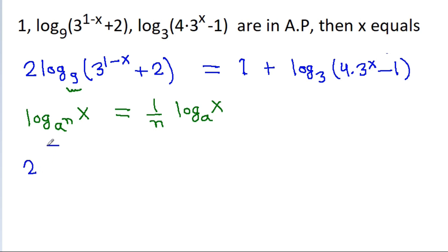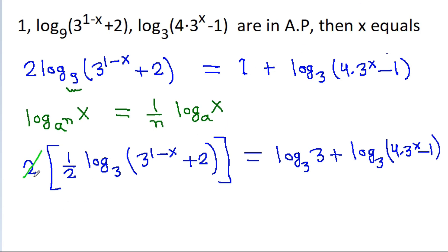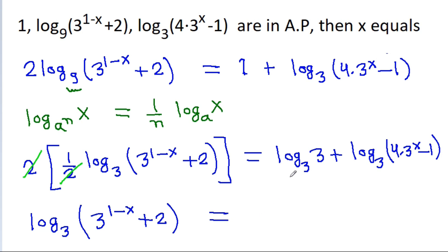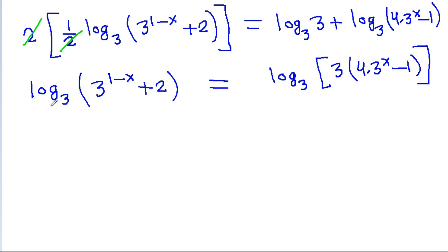So it will be: two times log base 9 becomes (1/2) times log base 3 of 3 power (1 minus x) plus 2, which equals log base 3 of 3 plus log base 3 of 4 into 3 power x minus 1. The 2 and 1/2 cancel, giving log base 3 of 3 power 4 into 3 power (1 minus x) plus 2 equals log base 3 of 3 times 4 into 3 power x minus 1. Since log base 3 is the same on both sides, we can equate the arguments.